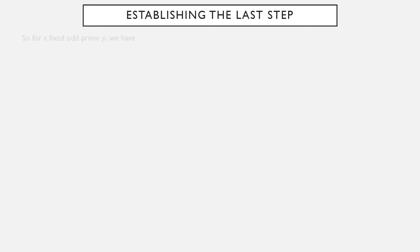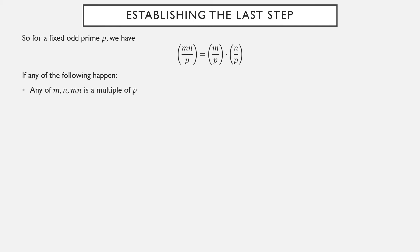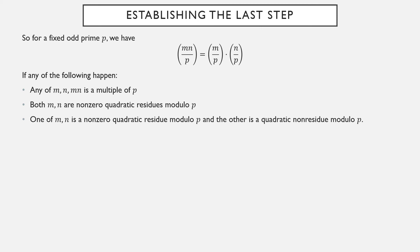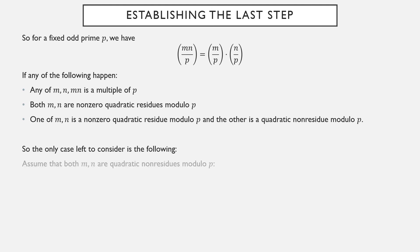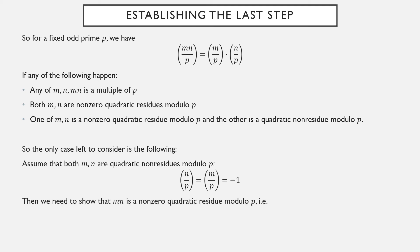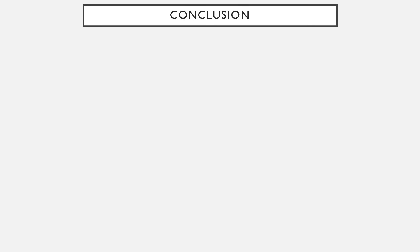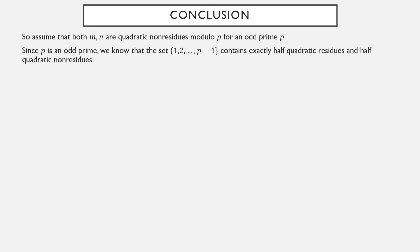So where are we in our theorem? We've established the multiplicativity formula when any one of the three values is a multiple of p, when both m and n are non-zero quadratic residues, and when one is a quadratic residue and the other is not. The only case left to consider is: what if both m and n are quadratic non-residues modulo p? In which case both Legendre symbols equal negative one, and we want to show the product mn is a quadratic residue modulo p. p is an odd prime, so in the reduced residue system, half are quadratic residues and half are quadratic non-residues.